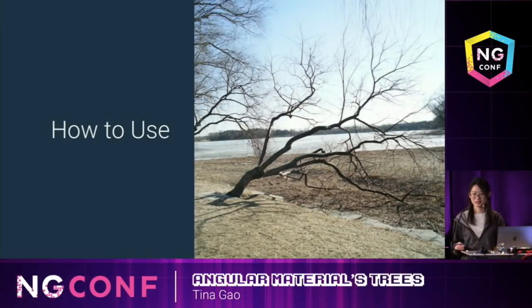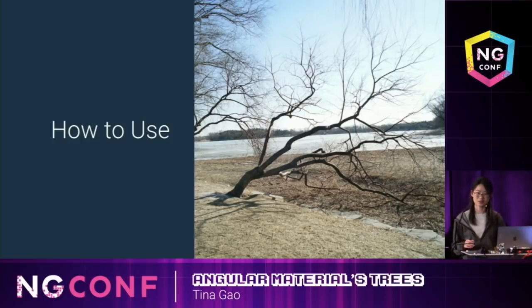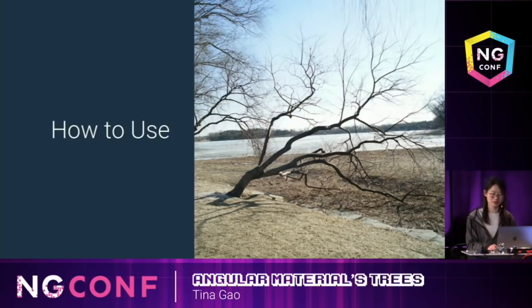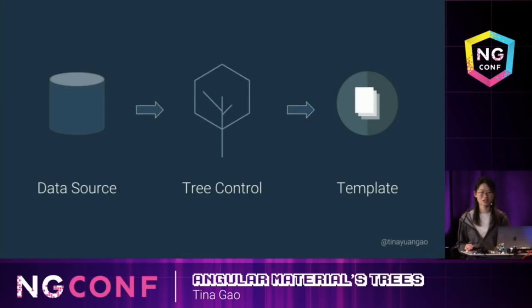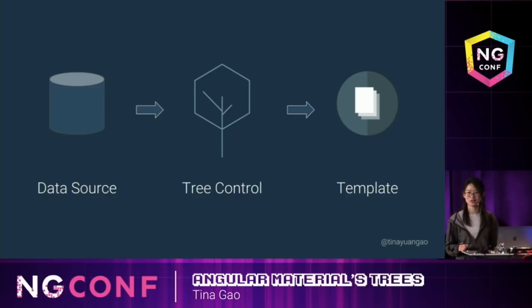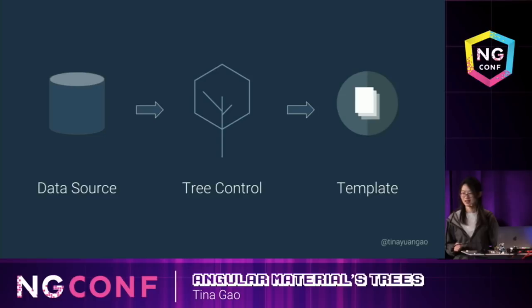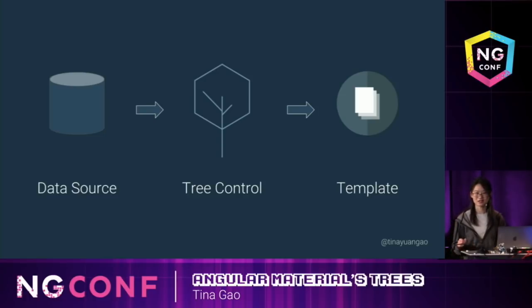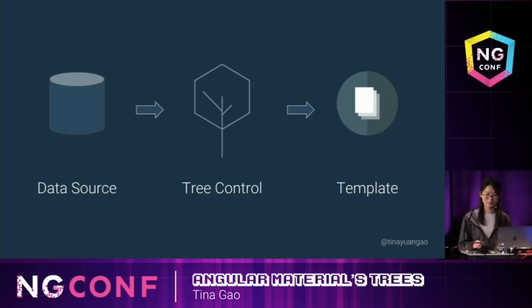So I just showed some trees we can build using the tree component. Let's see how we can build a tree. We need three things. The first is a data source, which provides the tree data. The second is a tree control, which controls the expansion and collapse of tree nodes. And the last one is a template — that's how we'd like to display a tree.